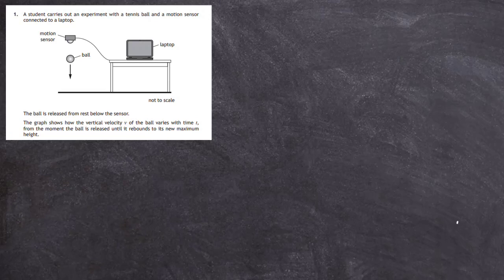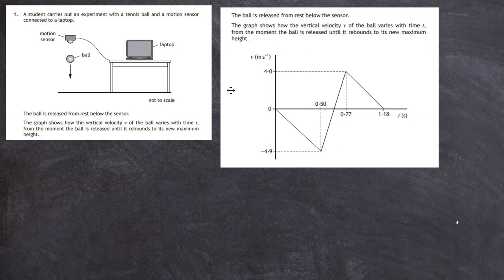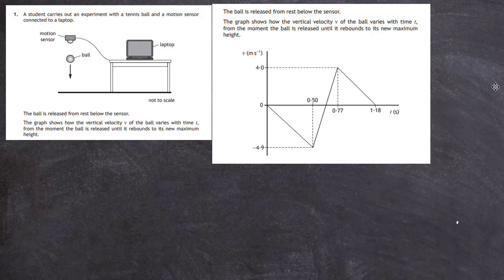Question 1 from section 2 of the 2019 Higher Physics SQA exam. A student carries out an experiment with a tennis ball and a motion sensor connected to a laptop. The ball is released from rest below the sensor, which sends its data to the laptop, and a graph of velocity over time of the tennis ball falling and bouncing up is recorded and displayed on the screen. You can see the graph here.